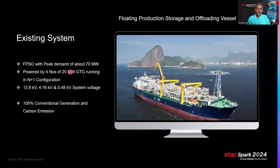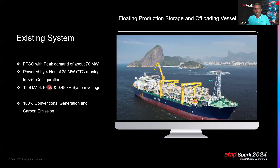All four 25-megawatt generators run together, sharing the 70-megawatt load at roughly 17.5 megawatts each. The system consists of three voltage levels: 13.8 kV where generators and large-capacity motors are connected, 4.16 kV where other motors are connected, and 0.48 kV for sub-distribution. At present, this existing system is 100% conventional gas turbine generation, making carbon emissions inevitable.